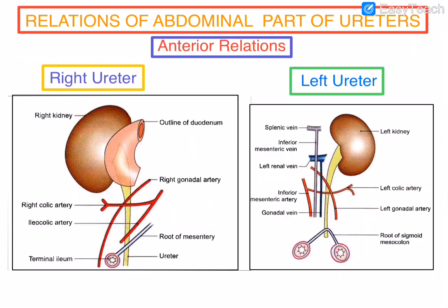In this session, we are going to discuss about the abdominal part relations of ureters on both sides. Both ureters are retroperitoneally present throughout their course. Most of the structures located retroperitoneally are related to these ureters — major vessels like the aorta and its branches, inferior vena cava and its tributaries. Some other organs like the kidney, ascending colon, ureters, and pancreas, some part of the duodenum, and the descending colon are also located retroperitoneally and some of these structures are related to the ureters.